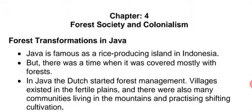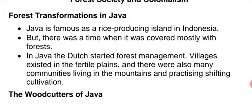Java is an island of Indonesia. In present time it is a famous island known for rice production, but there was a time when it was covered mostly with forest — it was a very dense forested area. In Java, the Dutch started forest management.